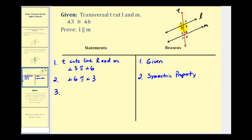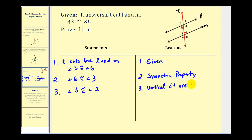For step three, we're going to state that angle three is congruent to angle two because vertical angles are congruent. We could also say by definition of vertical angles, or something similar to that.